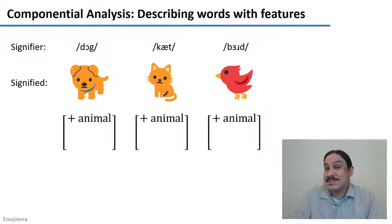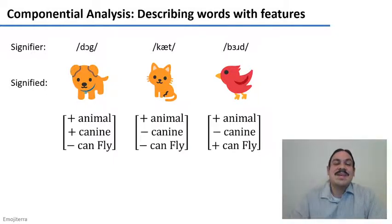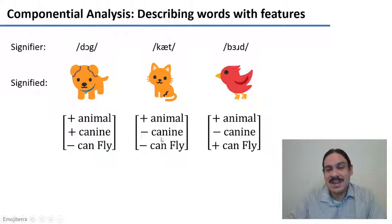What did you come up with? There's many ways to describe them. One could be that dogs are plus canine and then everything else is minus canine.